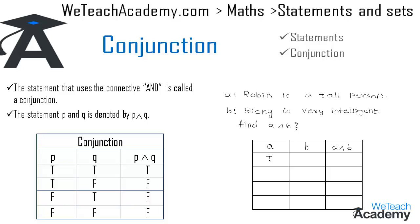If both statements A and B are true, then the conjunction of A and B is true. If A is true and B is false, the conjunction is false. If A is false and B is true, the truth value for A ∧ B would be false. So this was the basic introduction on conjunction — hope you understood the concept. Do like and subscribe to vteachacademy.com. Thanks for watching.